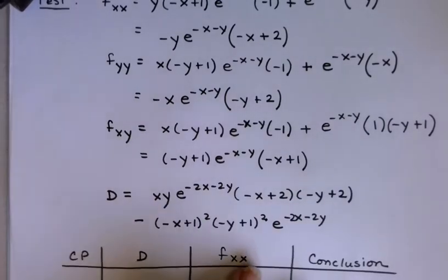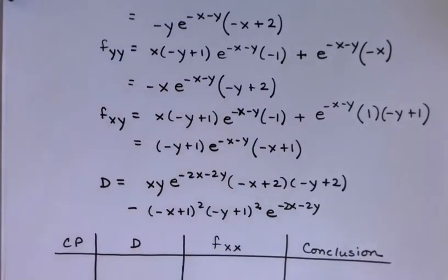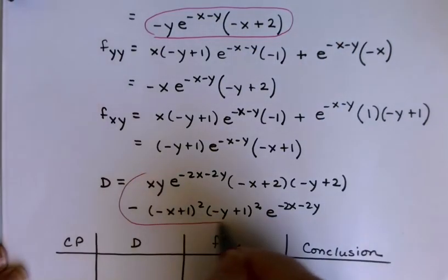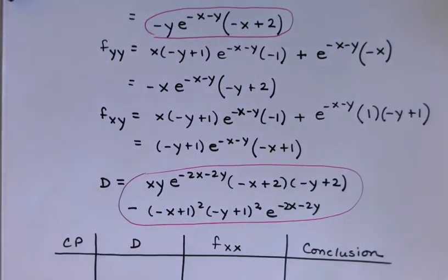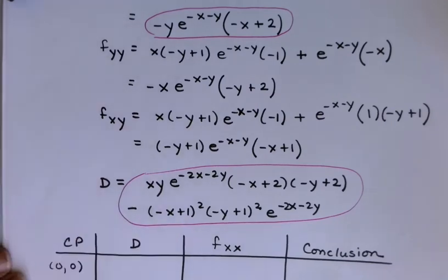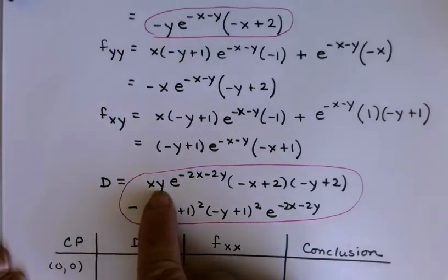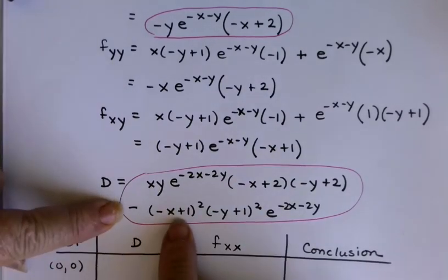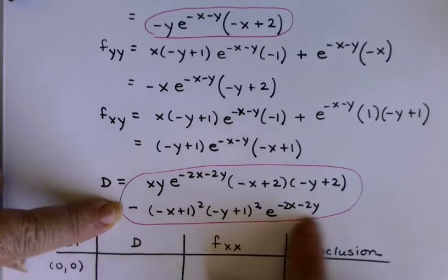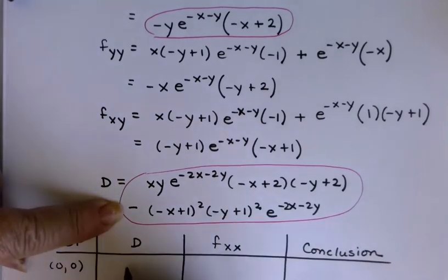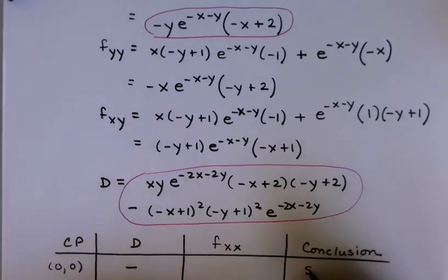My first critical point was (0,0). If I plug that into D, the (0,0) is going to wipe out the whole first term. Then notice everything in the second term is positive — those squared terms and the exponential. So I've got 0 minus something positive. D is negative, and I have a saddle point.